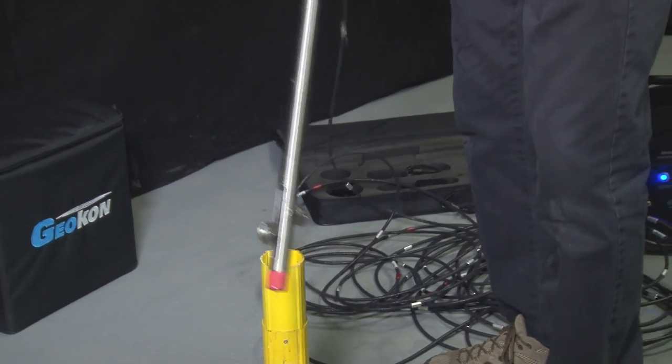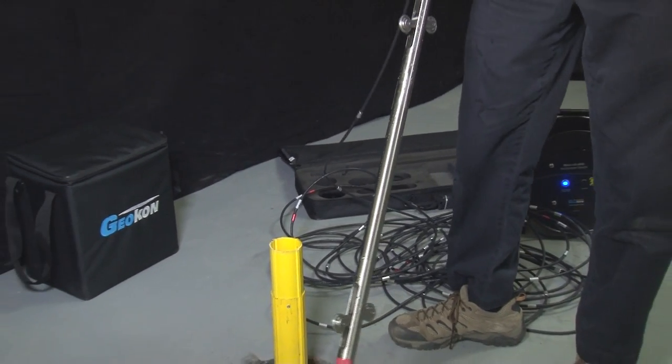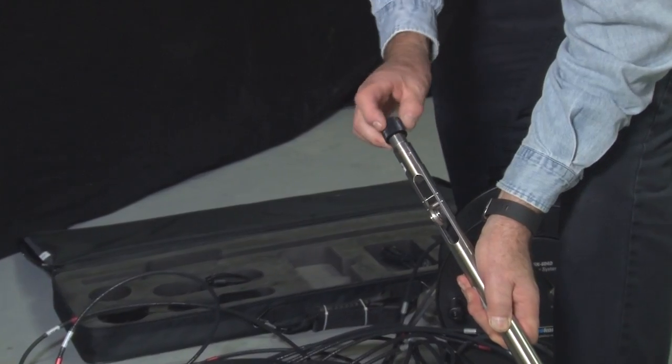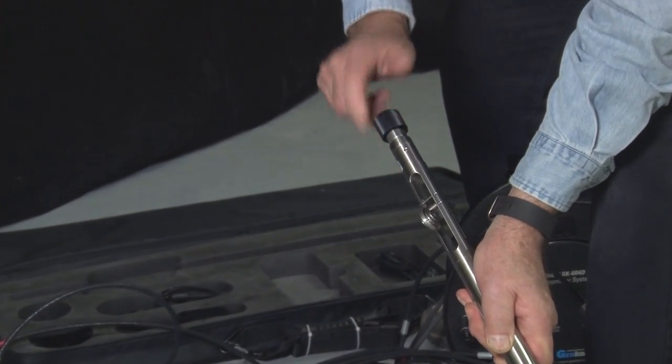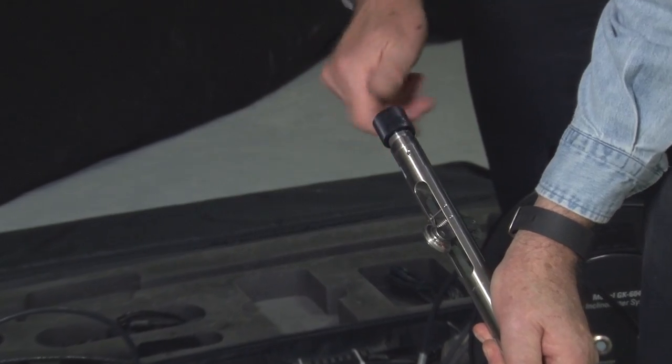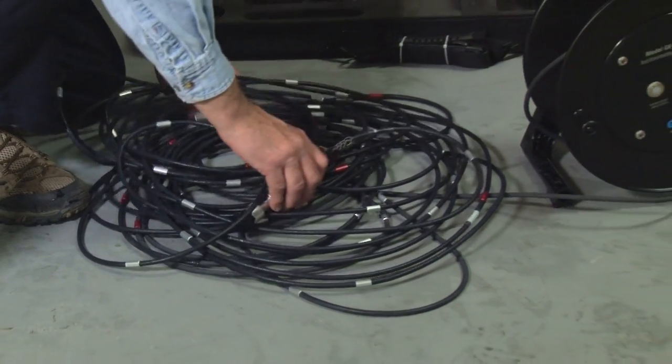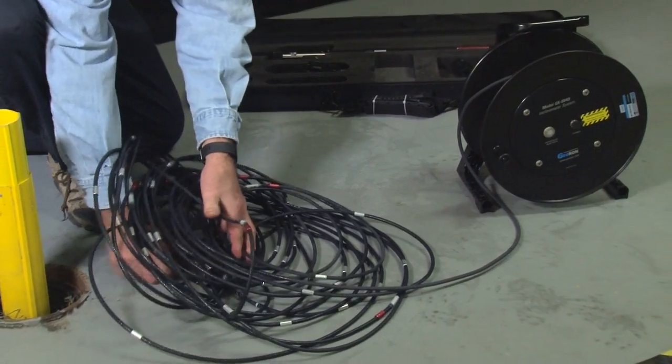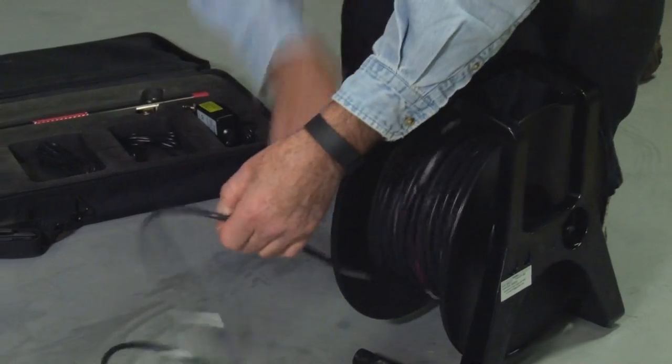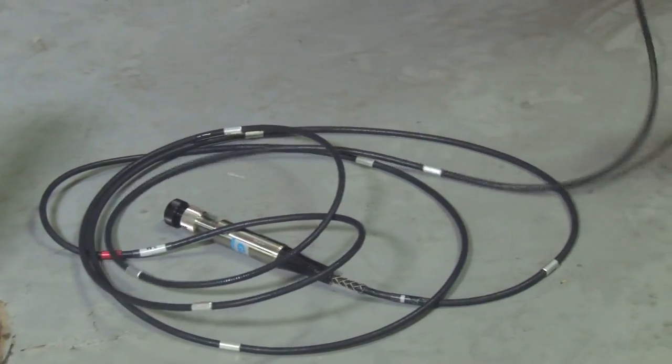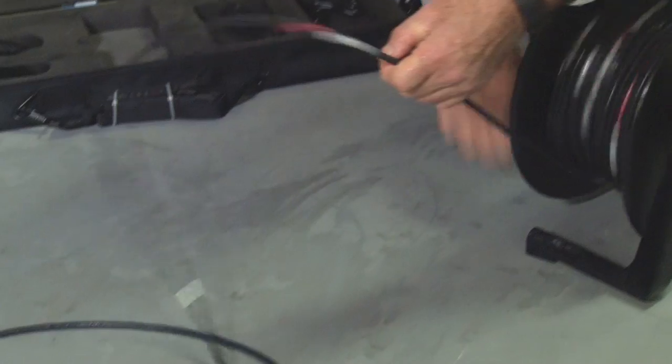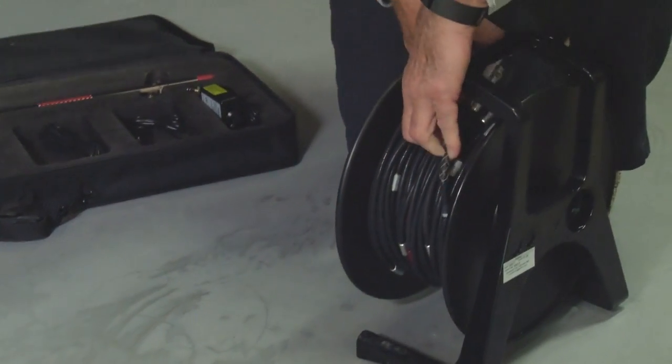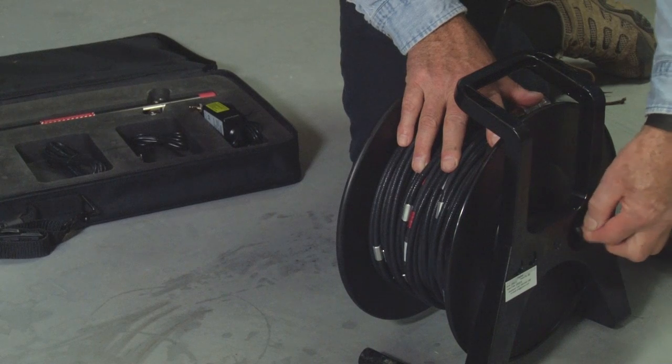Retrieve the probe from the casing. Dry it off and disconnect the probe from the control cable. Make sure to replace the probe and the cable's protective caps. Flip the pile of control cable over in order to reel in the cable without kinks. Make sure to lock the reel.